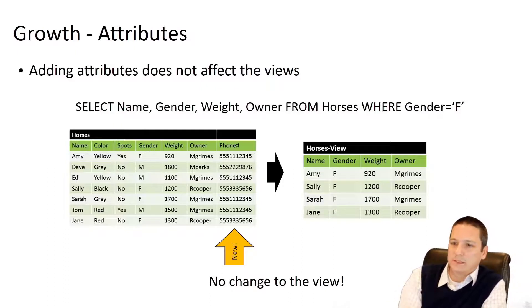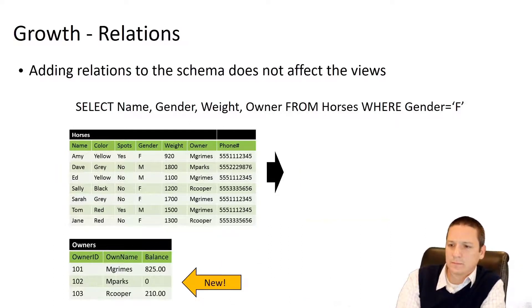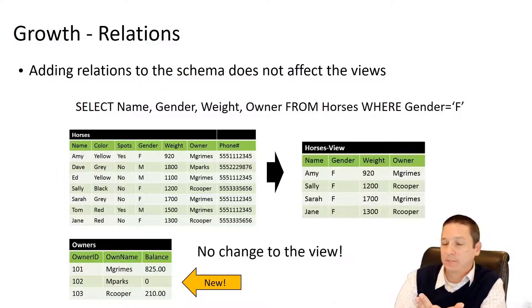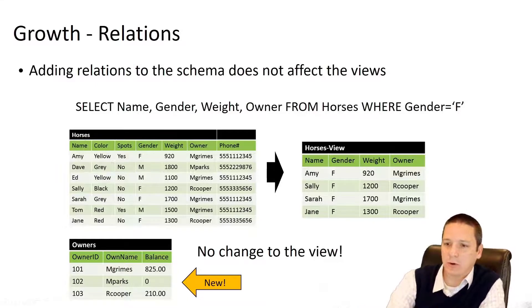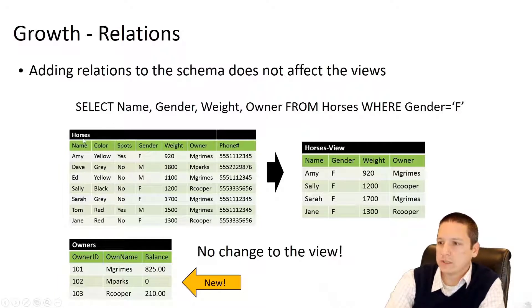This part here is projecting a subset of attributes, thus reducing the degree, and this section is selecting a subset of tuples, thus reducing the cardinality of the resulting relation. Adding attributes doesn't affect our view. If we were to add a new relation to our schema, same exact thing. We have our horses, we added owners, this has nothing to do at this point with horses. So our view is unaffected.